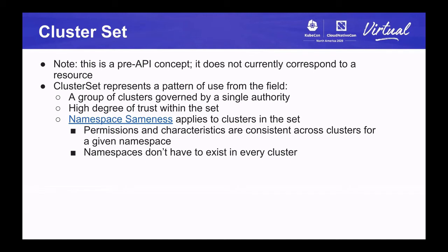We also introduced the concept of namespace sameness, which applies across all clusters in the set. This means that permissions and the various characteristics of a namespace are consistent across all clusters in a cluster set for a given namespace. You shouldn't have namespace foo mean one thing in one cluster and something completely different in another cluster in the same set. Namespace should be the primitive you use to share ownership across clusters and behave consistently in each cluster where it's deployed. That said, namespaces don't necessarily have to exist in every cluster — it's just that any cluster they exist in, they should behave in roughly the same way.